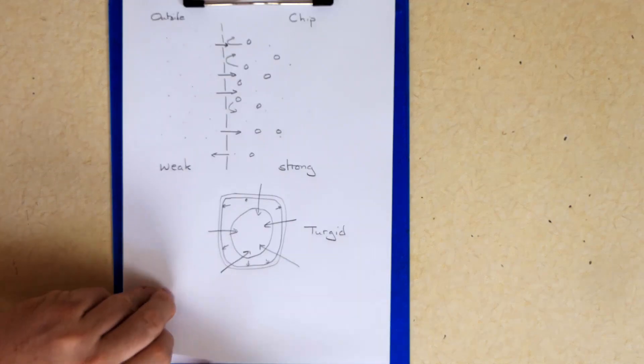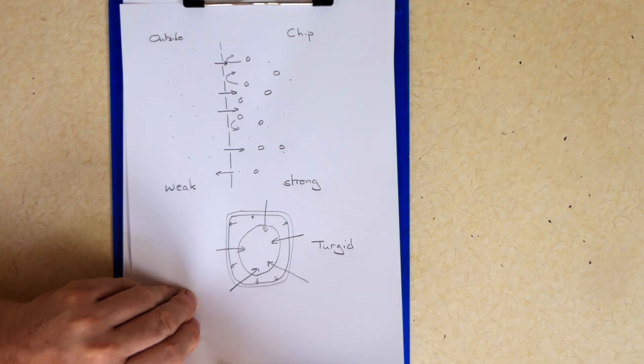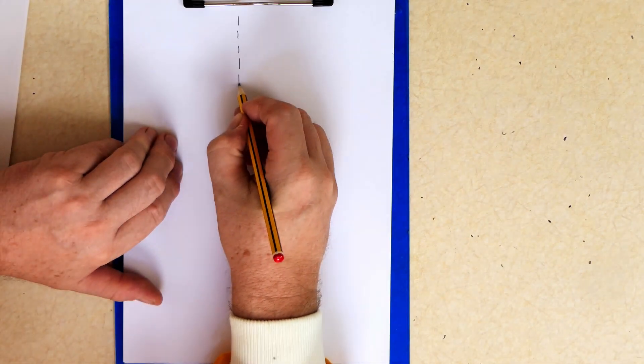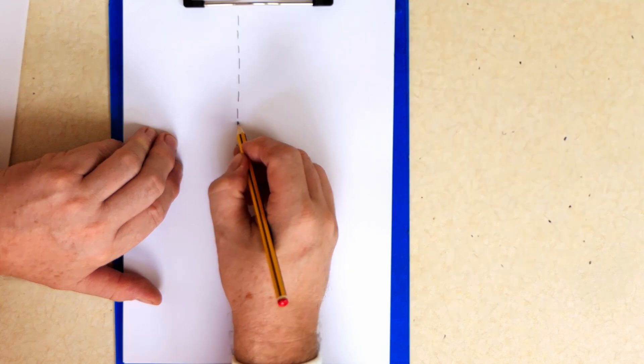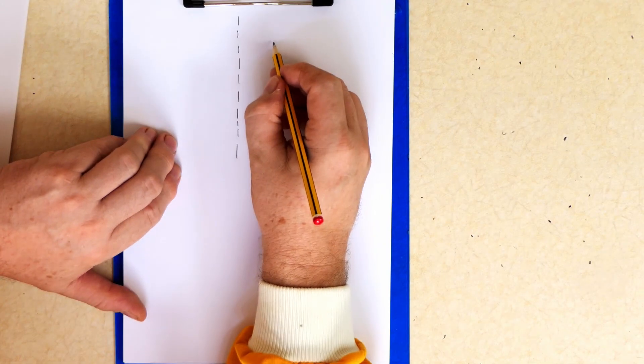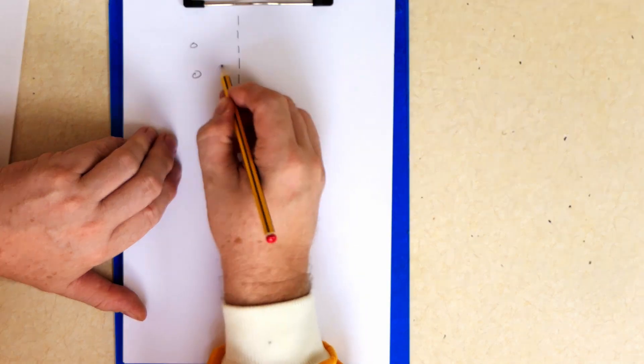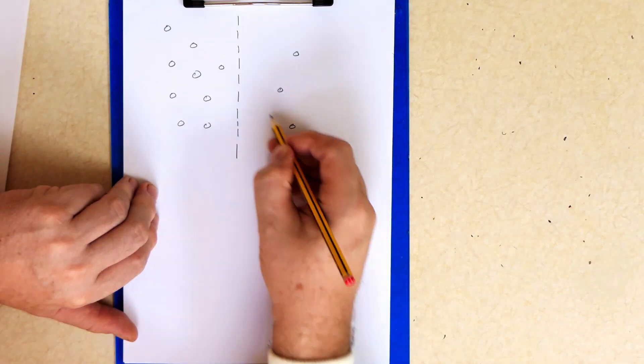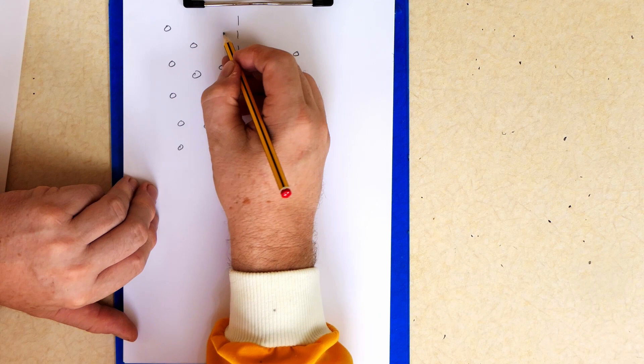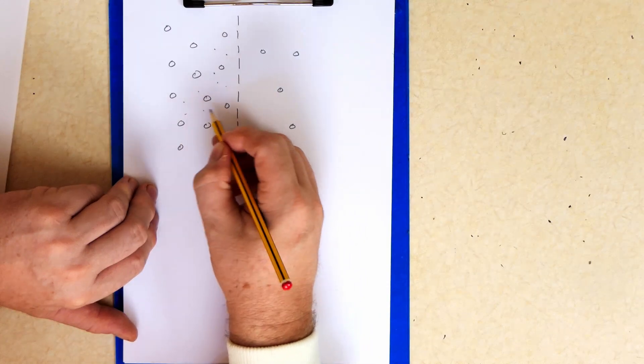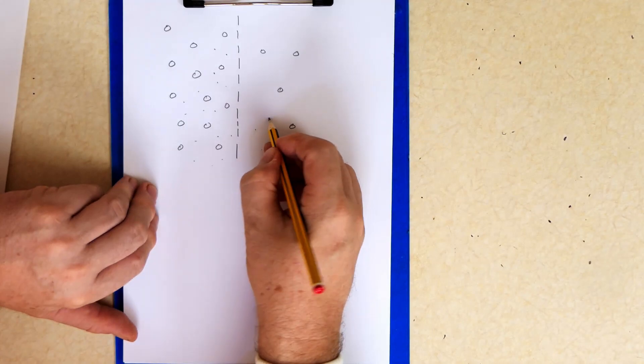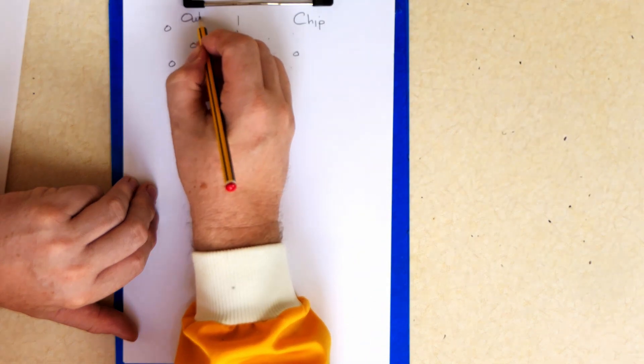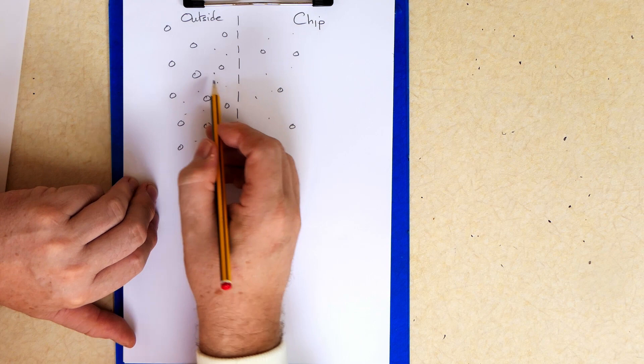If instead of this system we have the converse. So I've got my semi permeable membrane. Holes are a little bit big there. And I've got a strong solution outside and a weak solution inside. I'll now put all the water in. So this again is the chip and this outside.